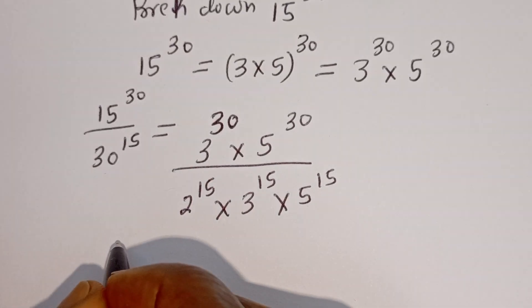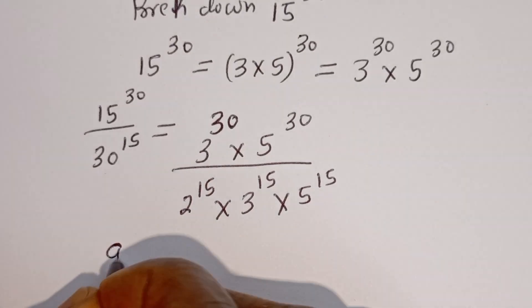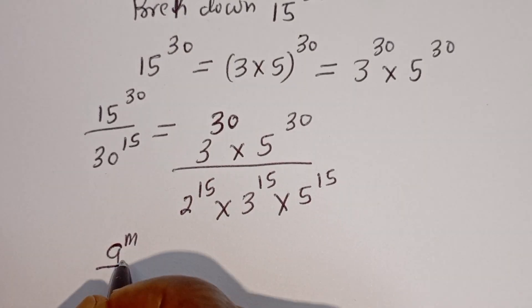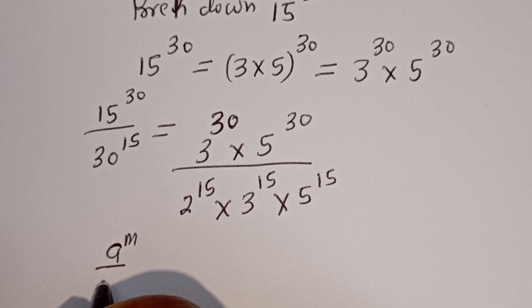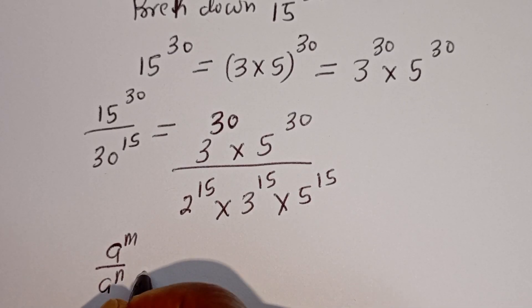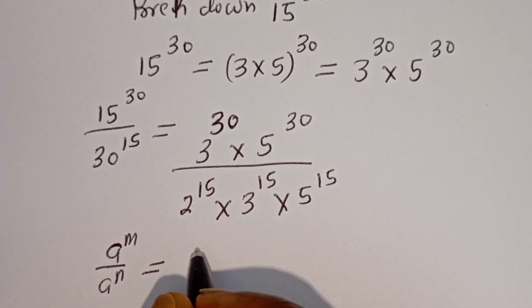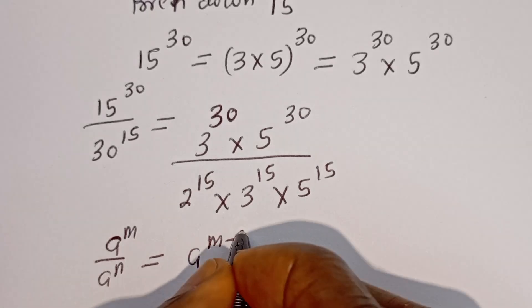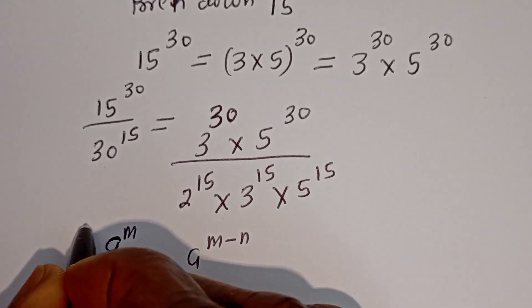Take note of this: if you have A to the power of M divided by A to the power of N, this is equal to A to the power of M minus N.